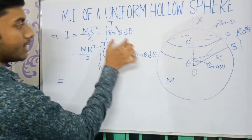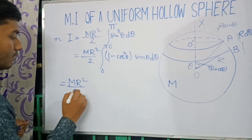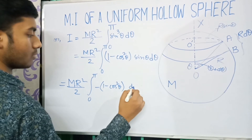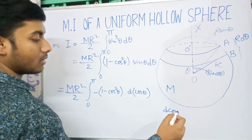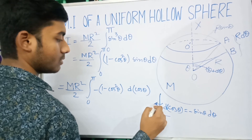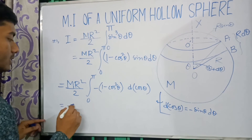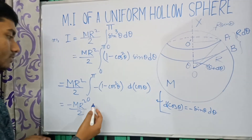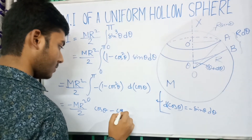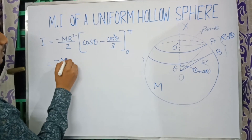We integrate sinθ·dθ, and since we replace sin²θ with (1 − cos²θ), this equals (MR²/2) times the integral. Using d(cosθ) = −sinθ·dθ, substituting gives us the antiderivative: −[cosθ − cos³θ/3], evaluated from 0 to π.